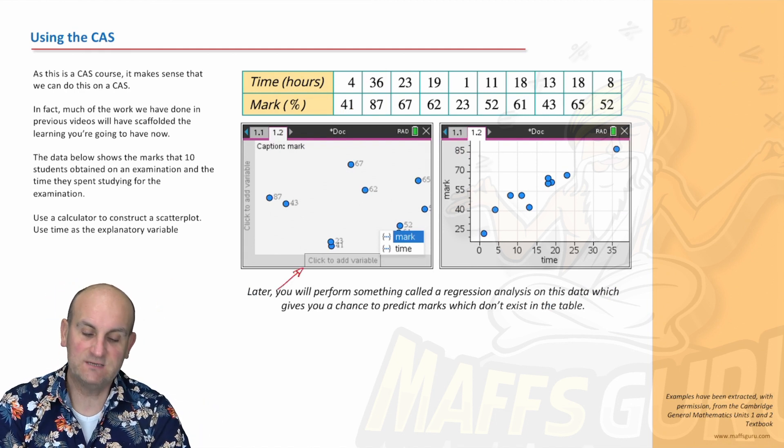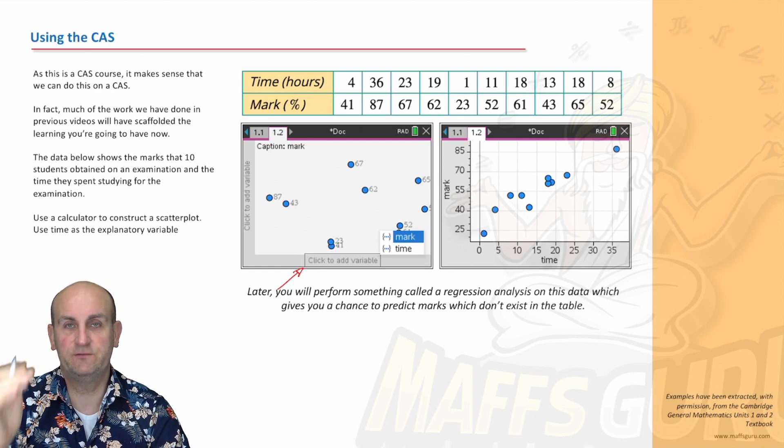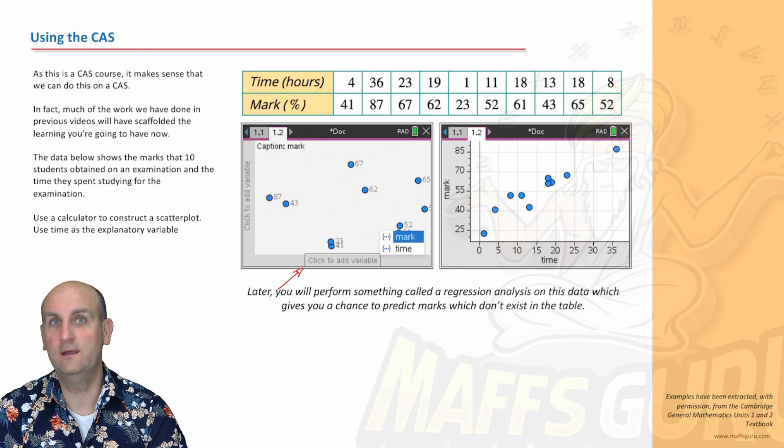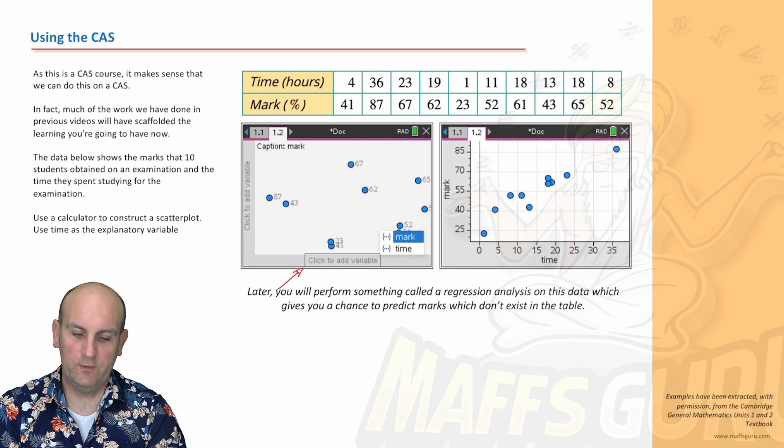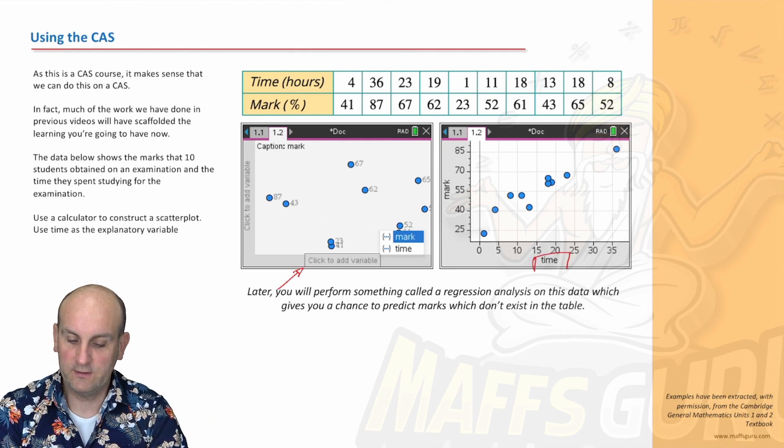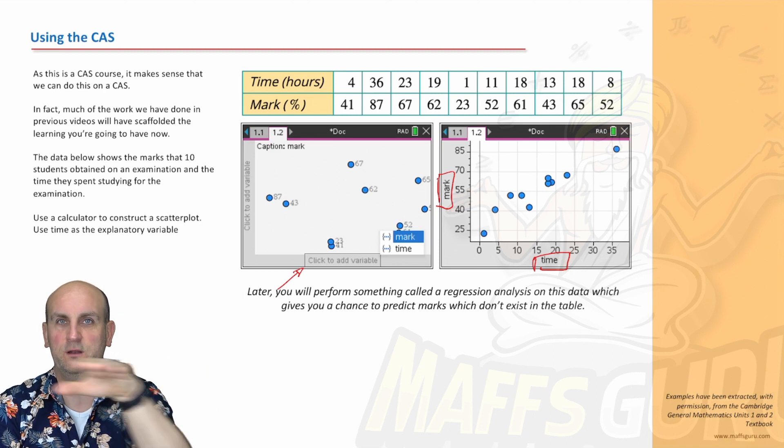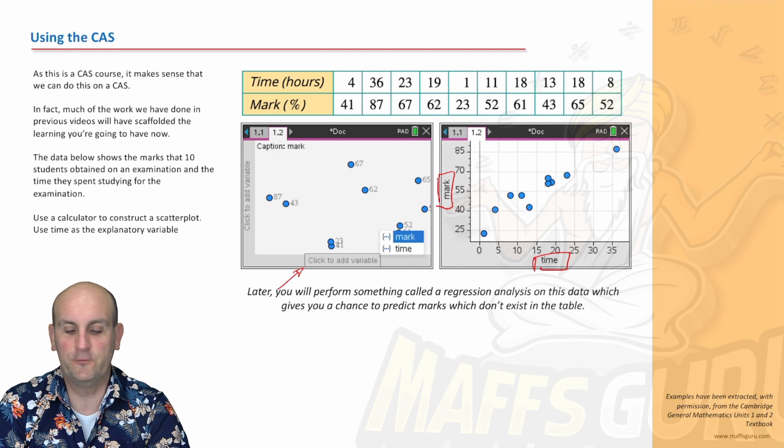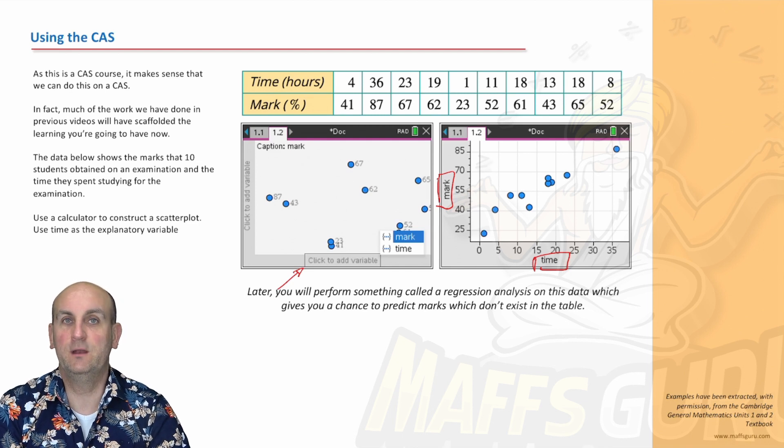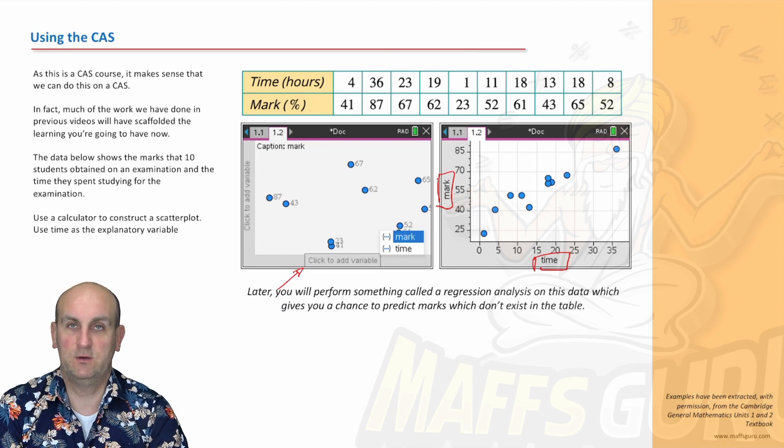And the TI Inspire, how helpful. Click to add variable. So when I click on it, it gives me the choice of mark and time. Why? Because mark and time is what we put in there. So what did we decide? We wanted time along the bottom. So I did that with time and I made sure that mark was up the side. Now, I think if you don't do the mark there, it just puts them all in a line along the bottom, which isn't very helpful. And as soon as I click the mark, what does it do? It turns it into a beautiful scatterplot, which is very much the scatterplot we were using.